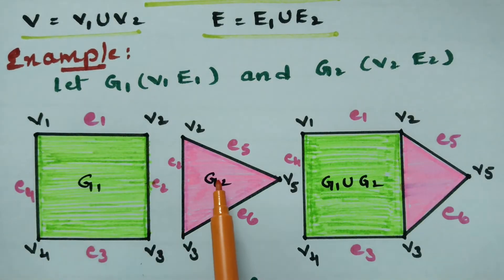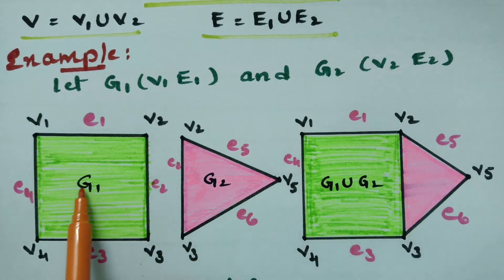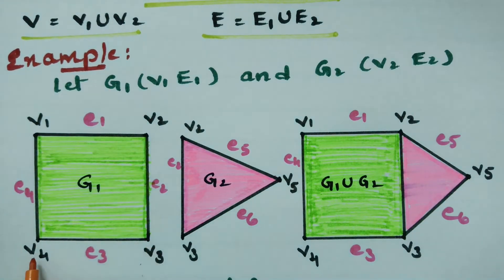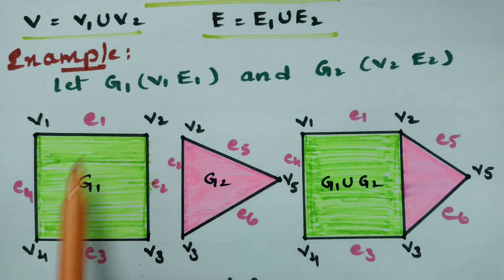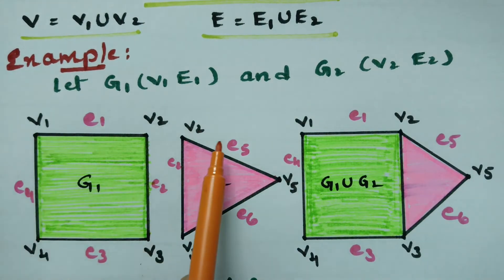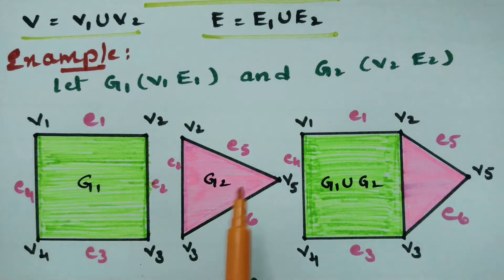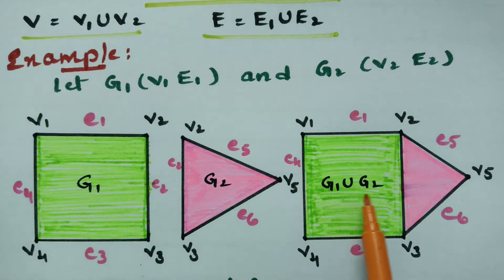Here is an example. This is graph g1 and this is graph g2, and this is the union graph. Graph g1 has vertices v1, v2, v3, v4, and graph g2 contains vertices v2 and v5. We need to form the union of these vertices and the union of these edges to get g1 ∪ g2.